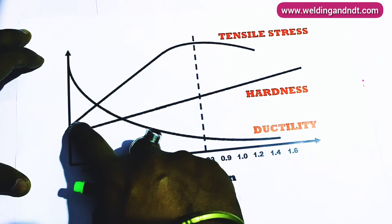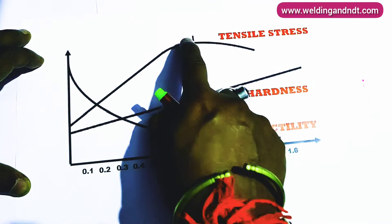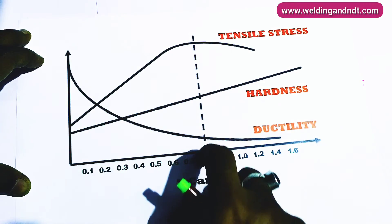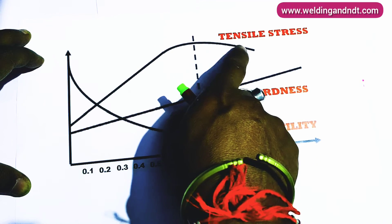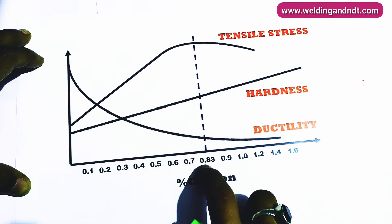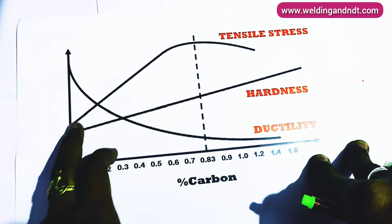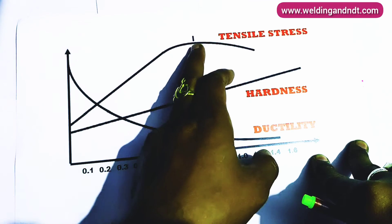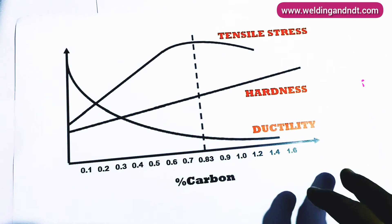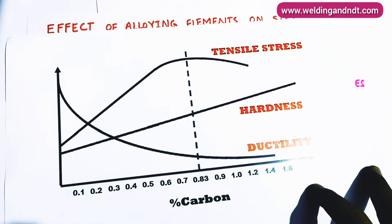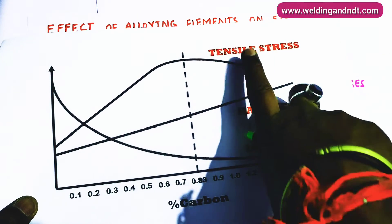Now we will see the tensile strength. The tensile strength is increasing but after a certain limit it starts decreasing as well. This point is at 0.83 percent. So up to 0.83 percent carbon the tensile strength increases, and after 0.83 percent the tensile strength decreases.